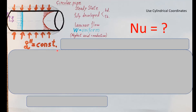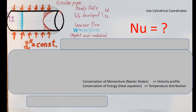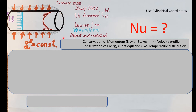Let's get started. We can see the sketch right here. Since we are dealing with a pipe, we're going to set up the cylindrical coordinate system: z is along the center of the pipe and r is along the radius. We are dealing with both a velocity profile and a temperature profile. We can get the velocity profile from Navier-Stokes and the temperature profile from the heat equation — the conservation of energy.